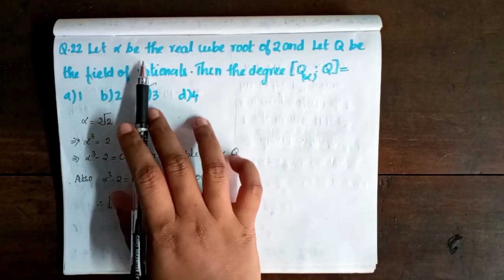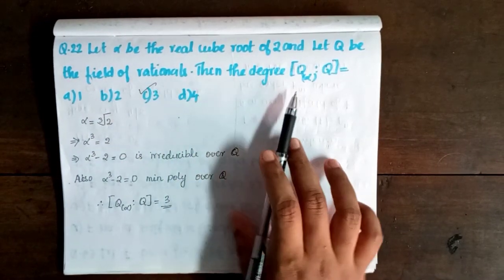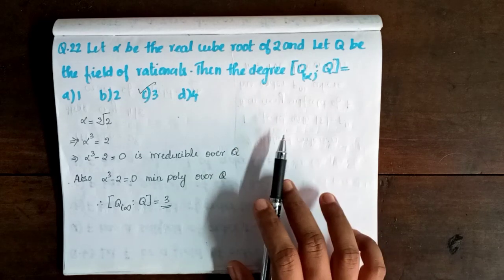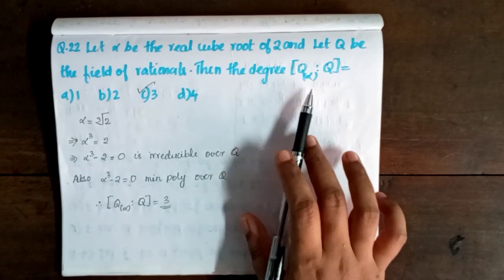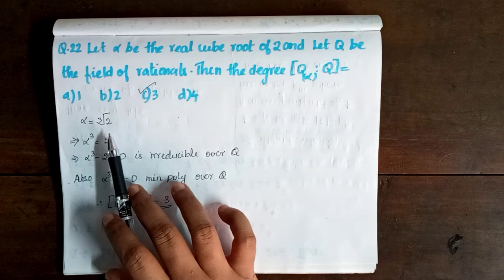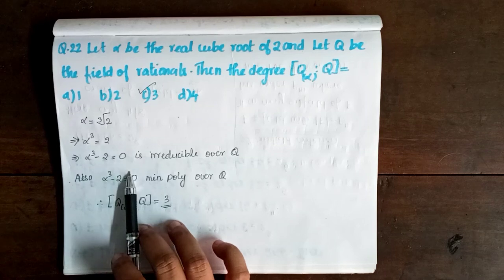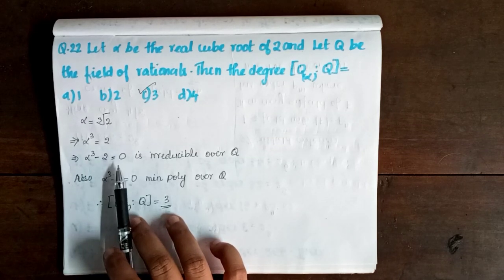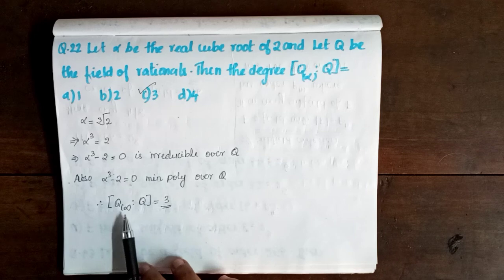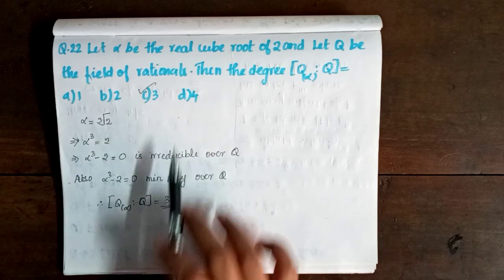Next, question 22: Let alpha be the real cube root of 2 and let Q be the field of rationals. Then the degree [Q(alpha) : Q] is? We have alpha equals cube root of 2, so alpha cubed equals 2, meaning alpha satisfies alpha cubed minus 2 equals 0. This polynomial is irreducible over Q and is the minimal polynomial of alpha, which has degree 3. Therefore degree [Q(alpha) : Q] equals 3. So option C is correct.